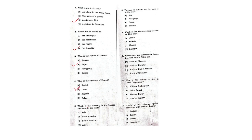Which of the following is the largest continent in the world? The answer is Asia. This is Series A. Varanasi is situated on the bank of which river? The answer is Ganga. Which of the following cities is known as the Pink City? The answer is Jaipur. Which waterway connects the Andaman Sea with the South China Sea? The answer is the Strait of Malacca.